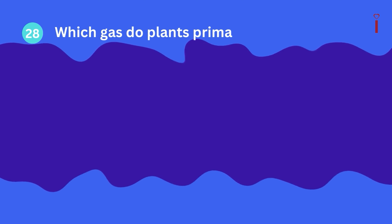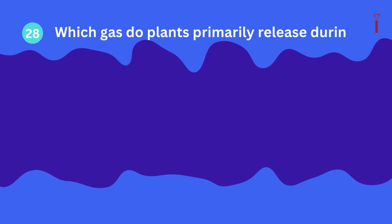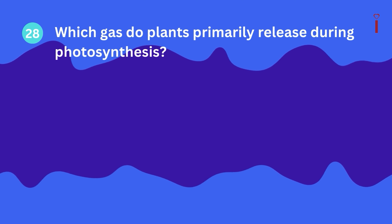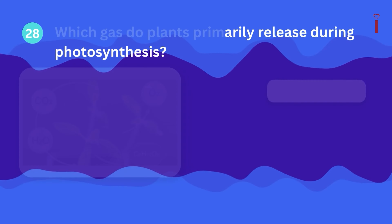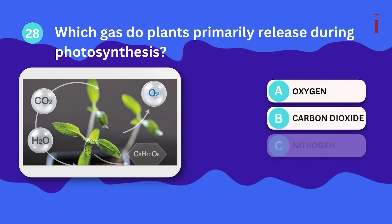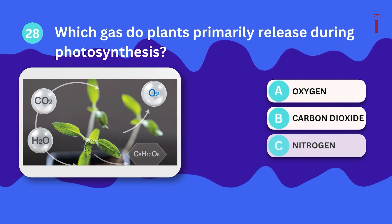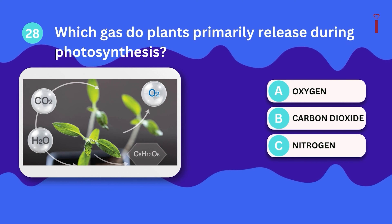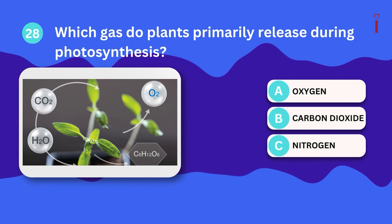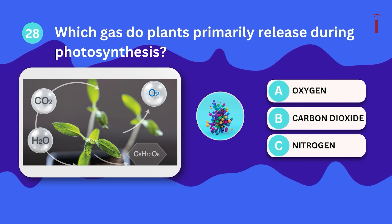Question 28: Which gas do plants primarily release during photosynthesis? A. Oxygen, B. Carbon dioxide, C. Nitrogen?